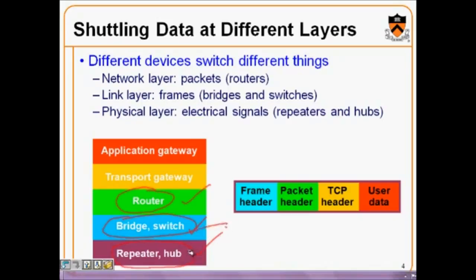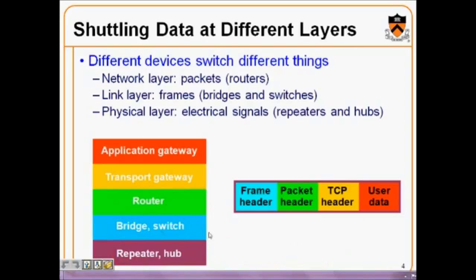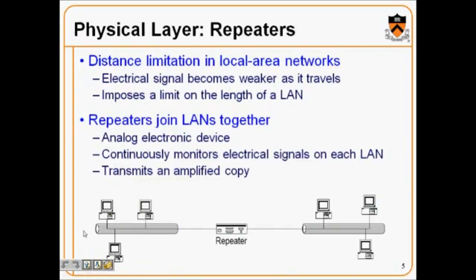Repeaters and hubs are interconnecting devices at the physical layer. Let's look in detail at what a repeater is. Repeaters were the first devices invented for making the LAN remove the distance limitation.